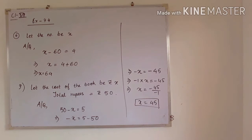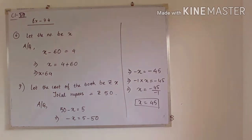Starting with question number 4. See what is given: I am thinking of a number; if 60 is subtracted from it, the result is 4. Find the number.